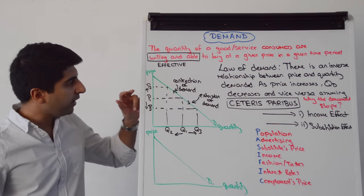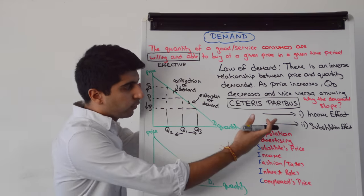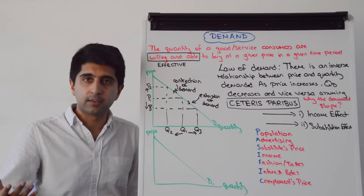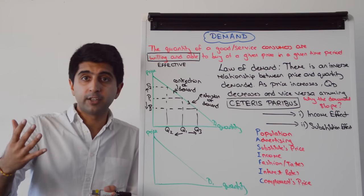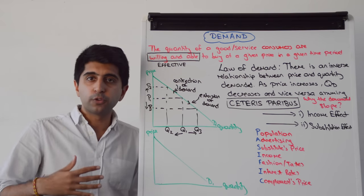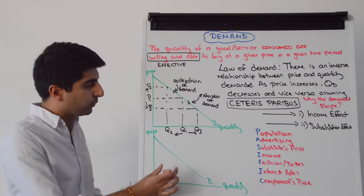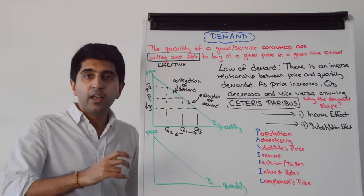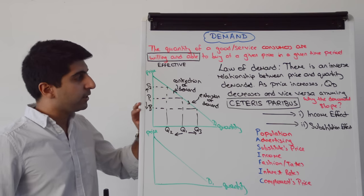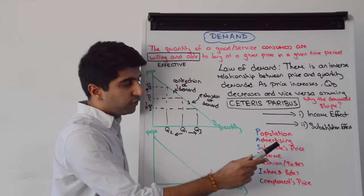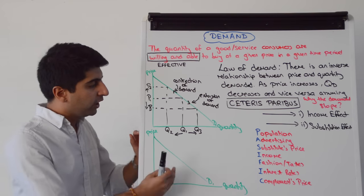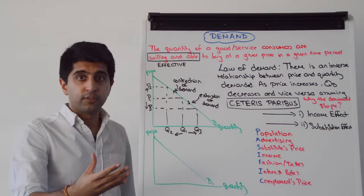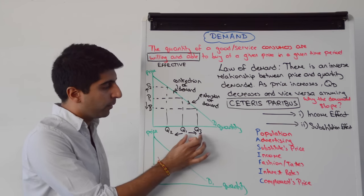What about the substitution effect? As prices go up, other goods and services become more price competitive, so we switch our demand — we switch our consumption towards buying those goods and services instead. That is why demand contracts for this good or service. The opposite applies for a price decrease: the income effect and substitution effect explain why quantity demanded increases as prices fall.